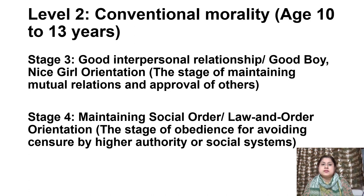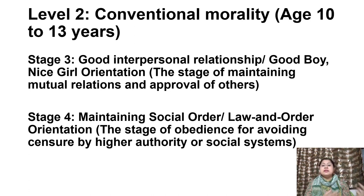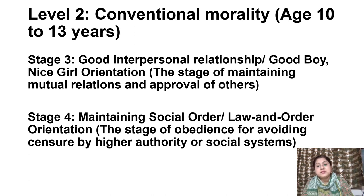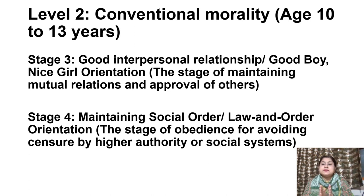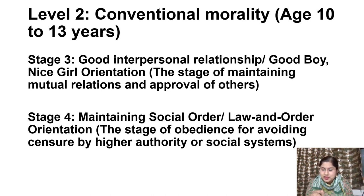Throughout the conventional level, a child's sense of morality is tied to personal and societal relationships. Children continue to accept the rules of authority figures, but this is now due to their belief that this is necessary to ensure positive relationships and societal order. Sticking to rules and conventions is somewhat rigid during these stages, and a rule's appropriateness or fairness is often questioned — so from this particular stage, questioning starts.